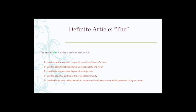Now let's understand the definite article and the way it is used and why 'the' should be used. We often commit mistakes in using the definite article called 'the'. The article 'the' is called a definite article because it is used to define a certain and specific condition or status of a noun. It is used to specify distinct, singular or unique quality of a noun. It is used before superlative degree of an adjective. It is used to specify a particular tribe, caste, community and color. It is used before a noun when we talk to someone who already knows which person or thing you mean.